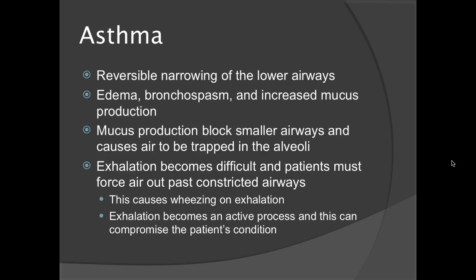Asthmatic patients have a reversible narrowing of the lower airways that can cause edema, bronchospasm, and increased mucus production. Mucus production blocks smaller airways and causes air trapping in the alveoli. Exhalation becomes difficult — patients must force air out past constricted airways, which causes wheezing on exhalation. You will often see intercostal retractions in asthmatics in respiratory distress. It takes so much effort to exhale that they tire very quickly and can decline rapidly.